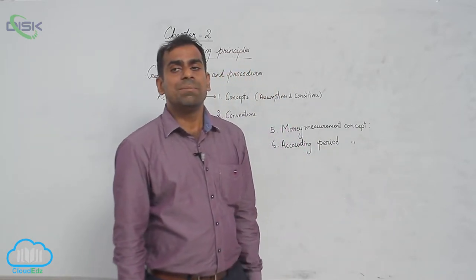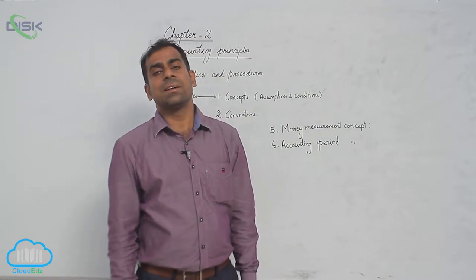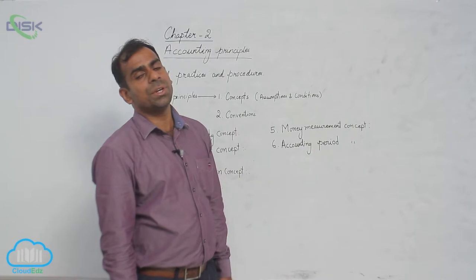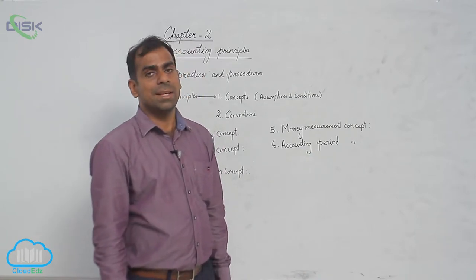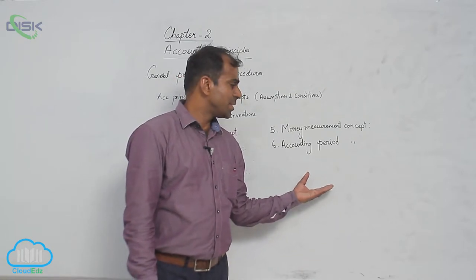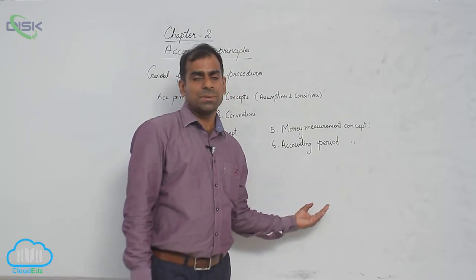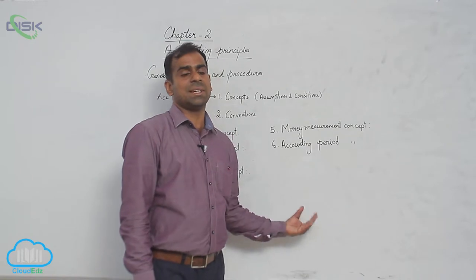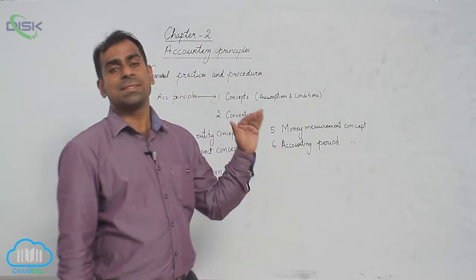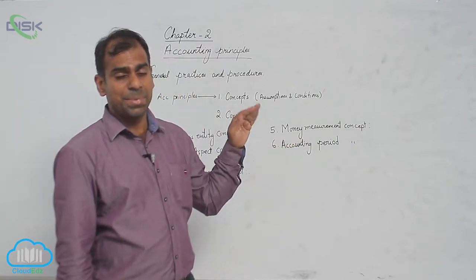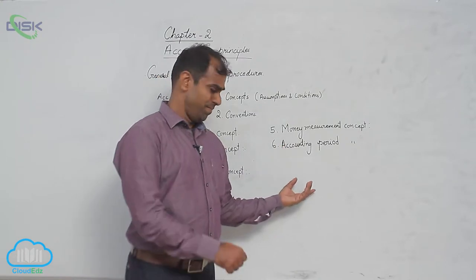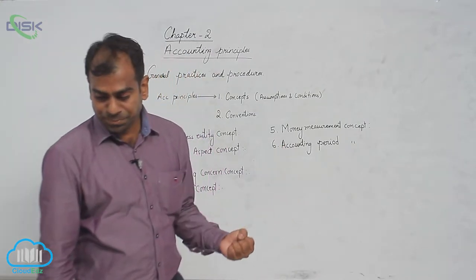Generally, 12 months is considered as an ideal period for you to conclude your operating results. Operating results are the results that deal with your purchase and sale of goods, and all expenses and incomes related to these activities. So 12 months is considered an ideal period for calculating your profit.